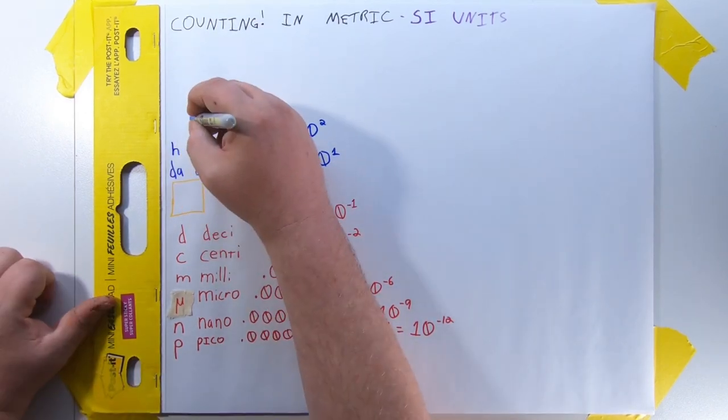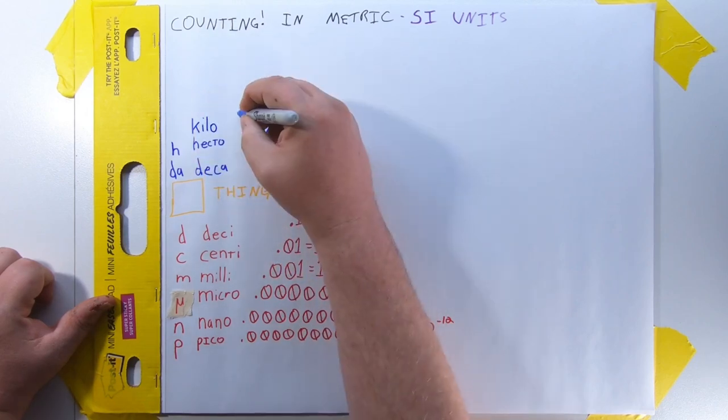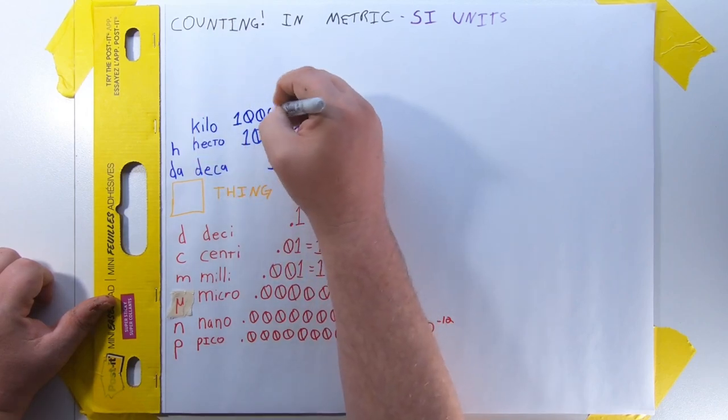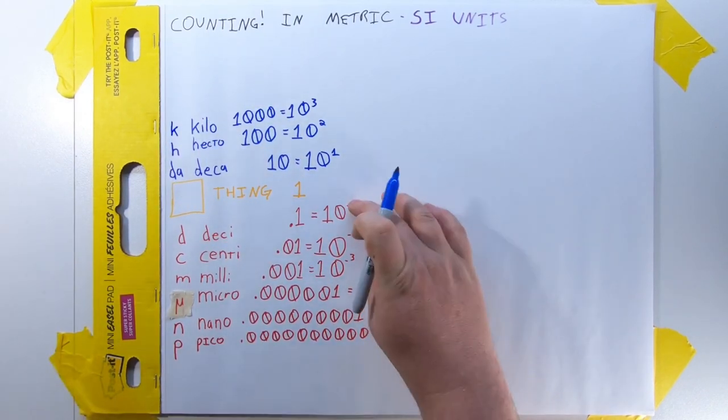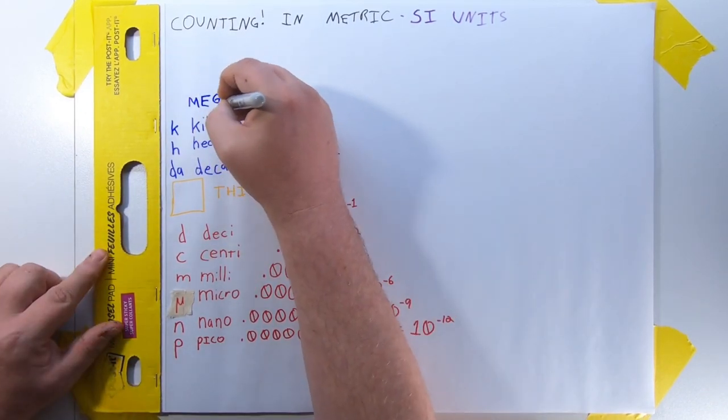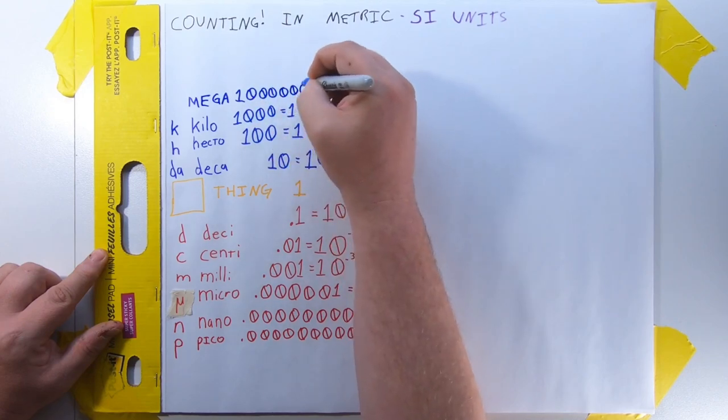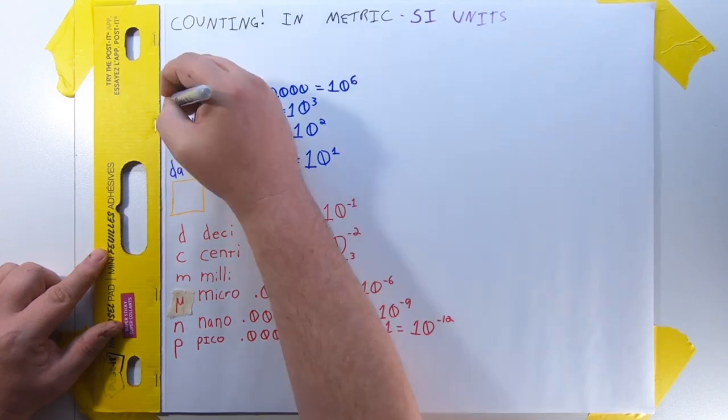If you have a thousand things, or 10 to the third things, you have a kilothing using lowercase k prefix. In this direction, we also make that magnitude jump again. If you have a million things, you have a megathing. That's 10 to the sixth things using capital M. We're on to big letters now.